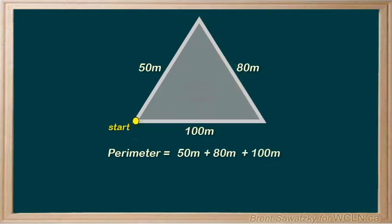and then 100 meters to bring me back to my starting point. Adding these up to get the perimeter, I'd have 50 plus 80 plus 100 equals 230 meters. So the perimeter of this triangle is 230 meters. All the sides added up. Units shown in our answer.